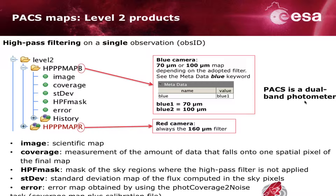This highlights that PACS is a dual-band photometer, so we always have two images of the same target simultaneously. The datasets belonging to the product include: the image layer, which is the scientific map; the coverage, which measures the amount of data falling into each spatial pixel; the mask used to avoid applying the high-pass filter on source regions; the standard deviation map; and the error map, obtained using the coverage-to-noise task that combines coverage information with calibration files.